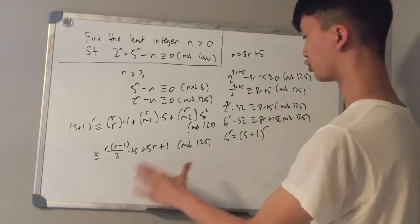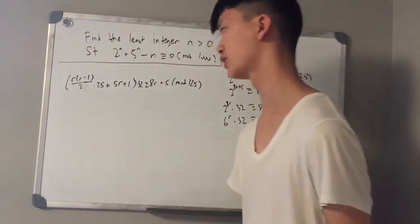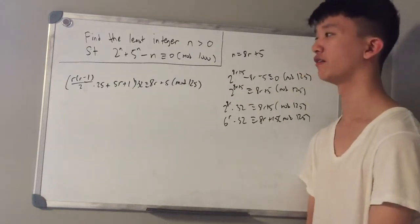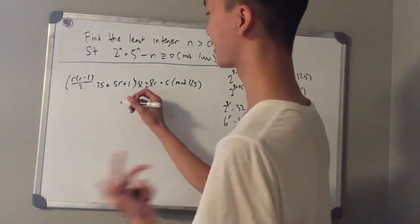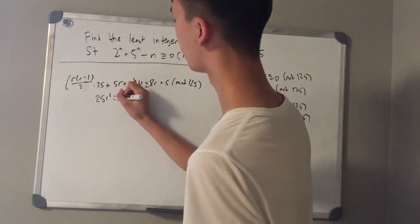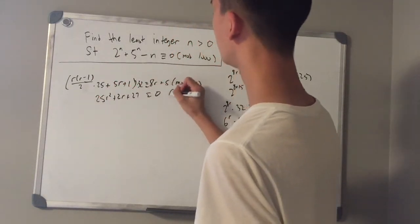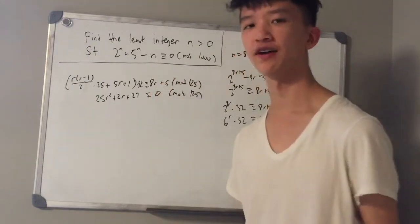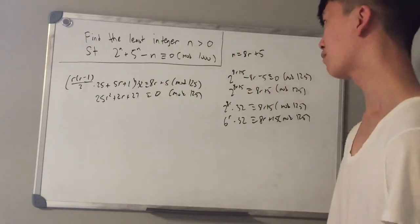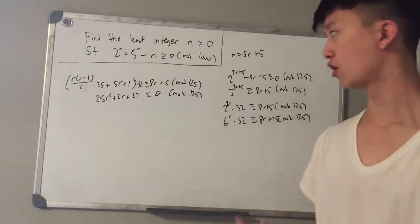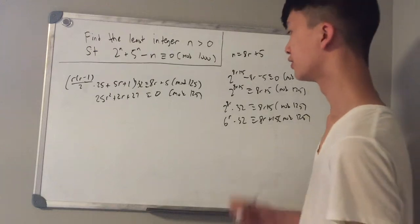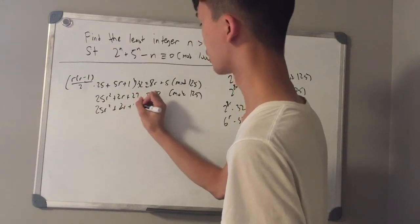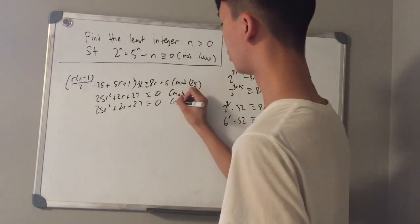Substituting this expansion into our equation, we have r(r-1)/2 times 25 plus 5r plus 1, all times 32, is congruent to 8r plus 5 mod 125. After expanding and subtracting 8r plus 5, this reduces to 25r squared plus 2r plus 27 is congruent to 0 mod 125. Applying the same divisor principle again, we can reduce this further to mod 5.